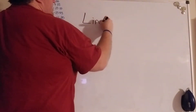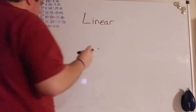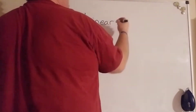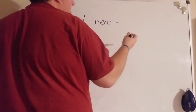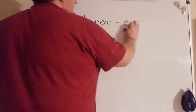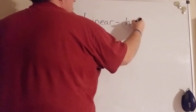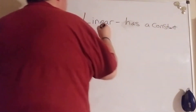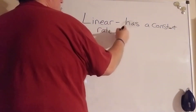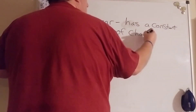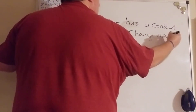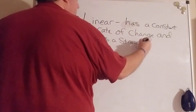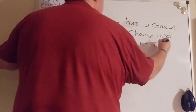The idea of something being linear has two parts to its definition, and both are very important. If something is linear, it has a constant rate of change, and it is a straight line.